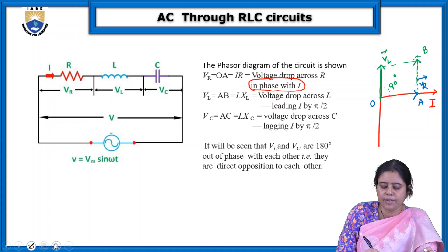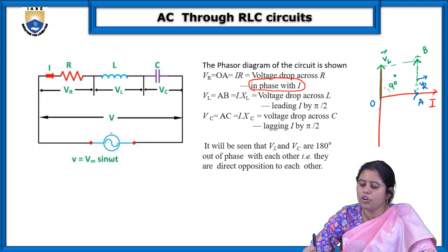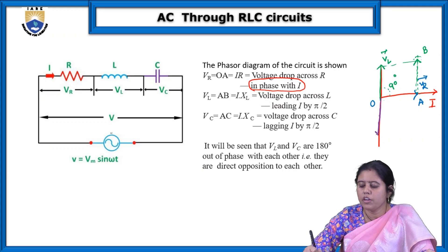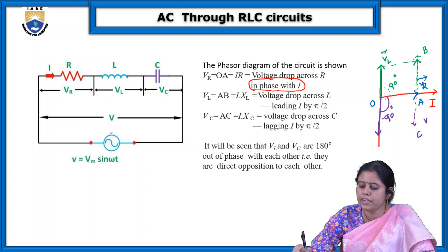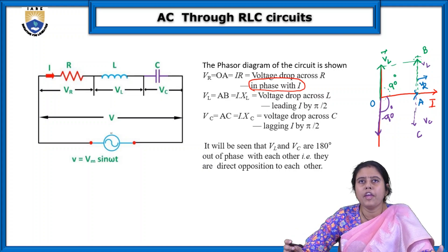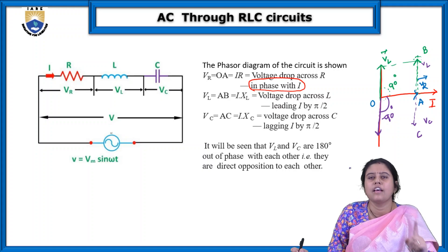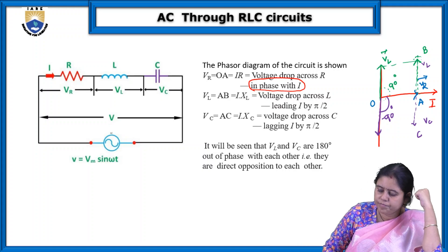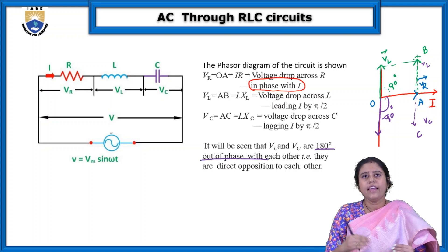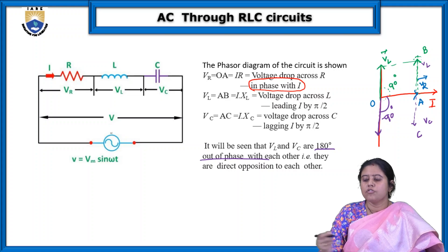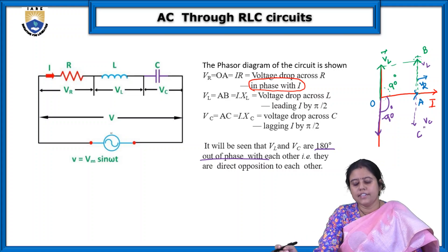There is also a voltage drop VC across the capacitor. VC always lags the current by 90 degrees — lagging means minus 90 degrees. So the green line is VL and below is VC. VL and VC are always 180 degrees out of phase — out of phase means opposite phase. So VL and VC are 180 degrees opposite to each other.